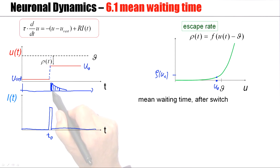And the mean waiting time would be the mean of this waiting time distribution. The mean waiting time for this exponential distribution would be just 1 over ρ(U₀).